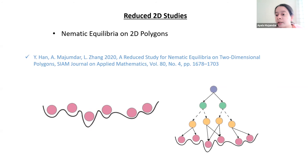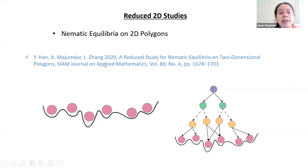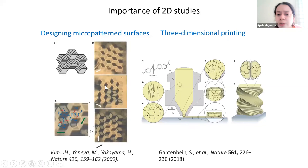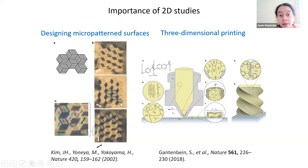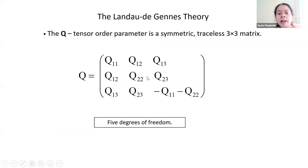Moving on to more recent work published in 2020 in the SIAM Journal of Applied Mathematics. Now we're looking at 2D geometries — more precisely, 2D polygons — studying both energy minimizers and non-energy minimizing solutions. 2D systems are relevant because they are idealizations of very thin three-dimensional systems. With more experimental freedom, people can design micropatterned surfaces, and you can model these surfaces with reasonable reliability in a two-dimensional framework. There is also 3D printing. So 2D studies are useful, and mathematically, there is new mathematics to be done there as well.